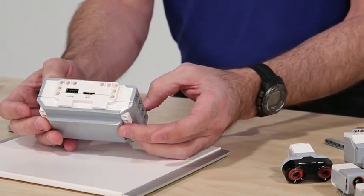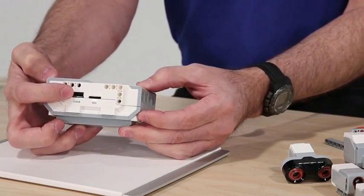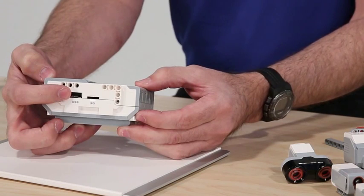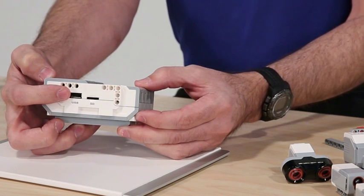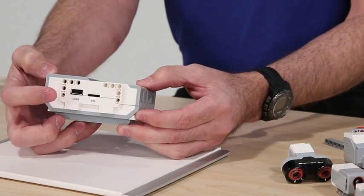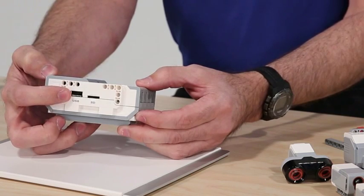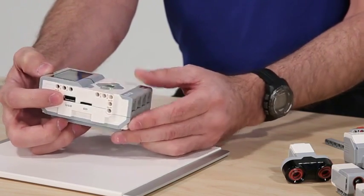If we look on this side, we can see that we now also have an additional USB port that will accept a flash drive, a Wi-Fi dongle, or an actual connection to another EV3 brick, which gives us options through daisy chain.